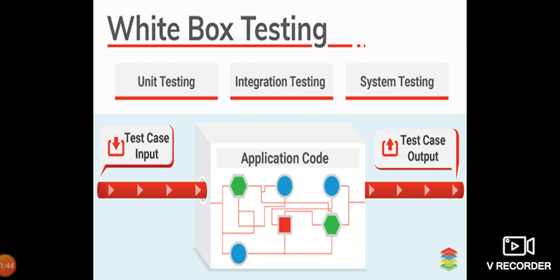For white box testing, there are three parts: test case inputs, application code, and test case output. This is a three-way testing approach covering unit testing, integration, and system testing. Basically, white box testing is applied for design and structure only, not for programming, functional, and coding testing, which is based on black box testing.